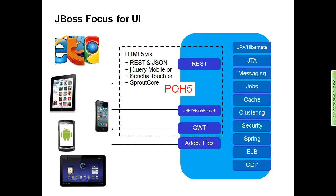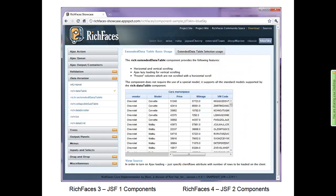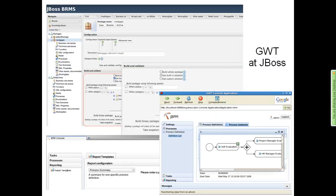We also have JSF2 and Rich Faces 4, and Google Web Toolkit — primarily owned by Google, but we have the Arrive Project which gives it push capability as you saw in the last demo. The three we're primarily investing in are the Po5 architecture, JSF2/Rich Faces 4, and GWT. We actually use GWT internally for a lot of our own projects — the Drools Governor Project (JBoss BRMS), the new JBPM technology, App Server 7's admin console, and JBoss Operations Network (RHQ) are all being created with Google Web Toolkit.